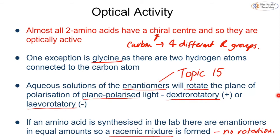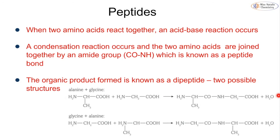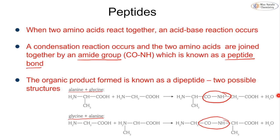If you can't remember about enantiomers, please have a look back at topic 15. When two amino acids react together we can get a condensation reaction, and the amino acids are joined together by the formation of an amide group — we call this a peptide bond. When we've got the peptide bond we can form something called a dipeptide, meaning we have two amino acids joined together. So we can either have alanine first followed by glycine, or glycine followed by alanine, and in both cases it's a condensation reaction so we are removing water.